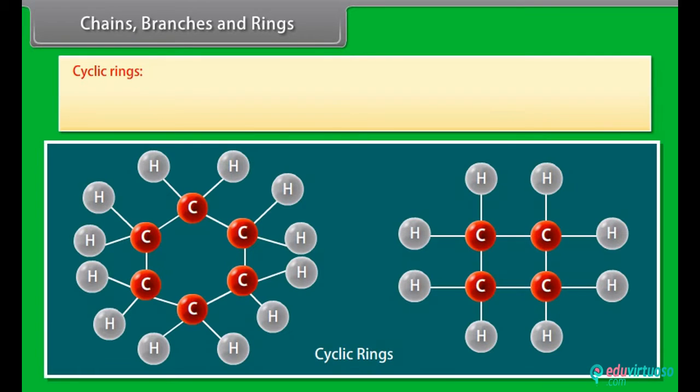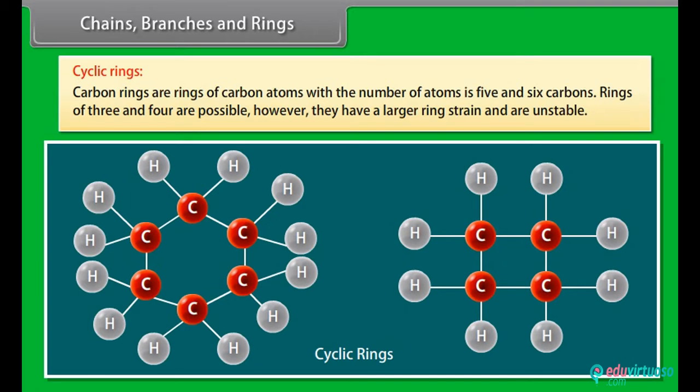Cyclic rings. Carbon rings are rings of carbon atoms. The number of atoms to form a ring is five and six carbons. Rings of three and four are possible, however they have a larger ring strain and are unstable.